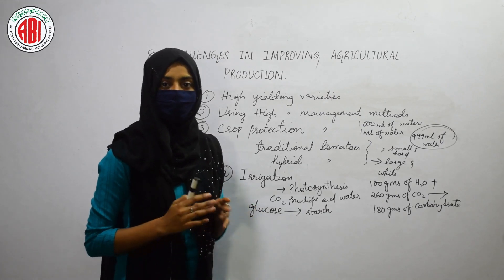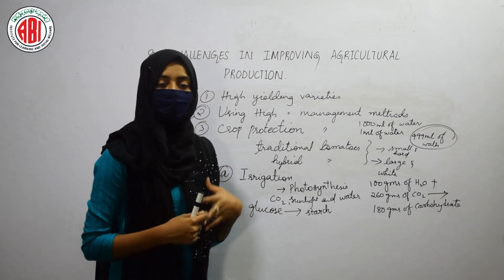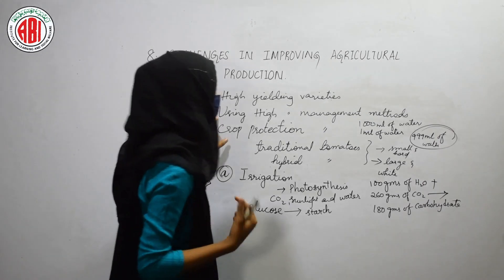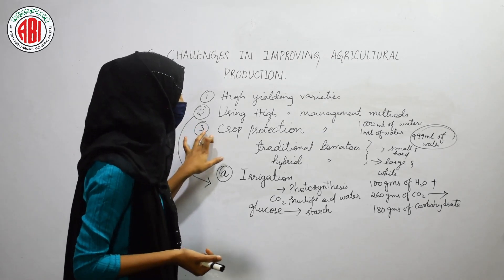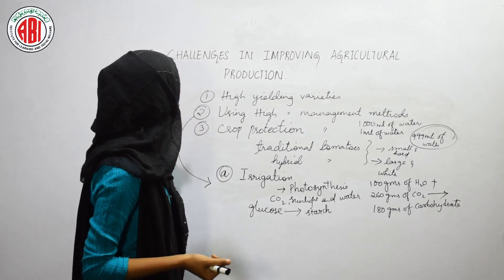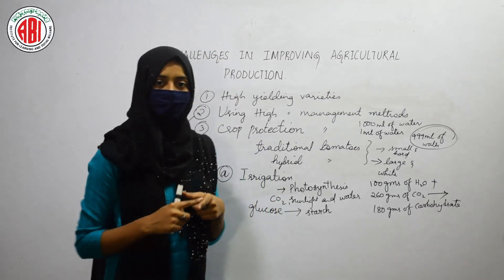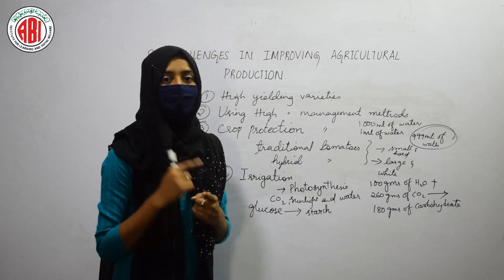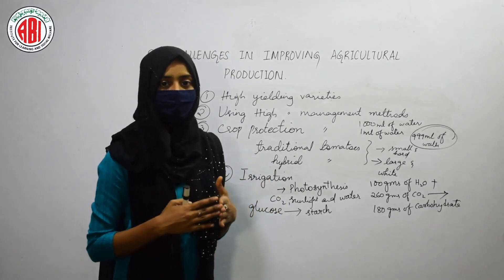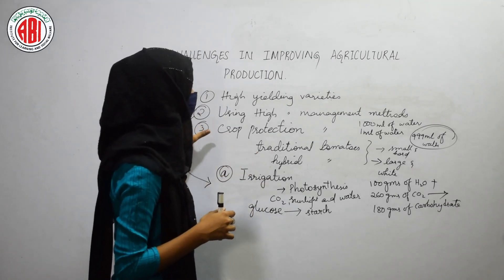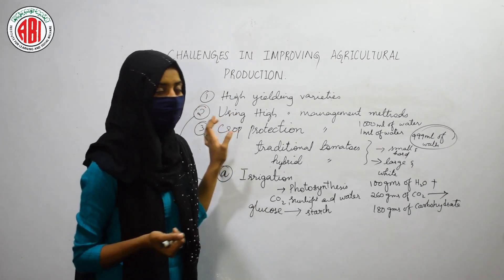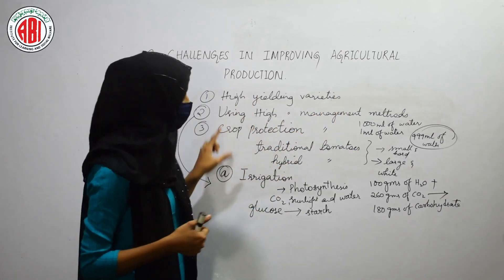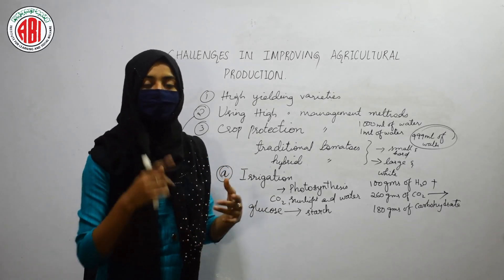To summarize, the methods to increase crop production are: first, developing high yielding varieties; second, using high yielding management methods; and third, crop protection management. Regarding high yielding varieties, we talked about traditional and hybrid varieties — hybrid varieties show more desirable characteristics compared to local ones. Regarding high yielding management methods, the first method is irrigation, which means supplying water to the fields.